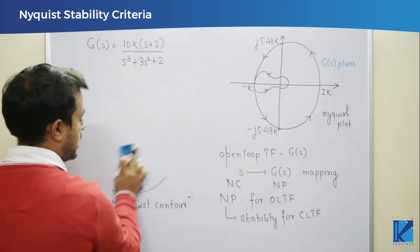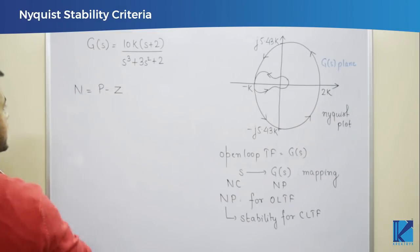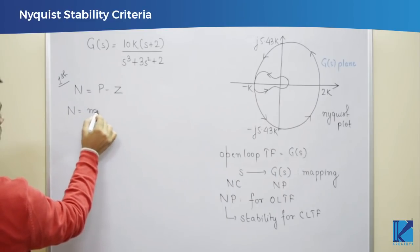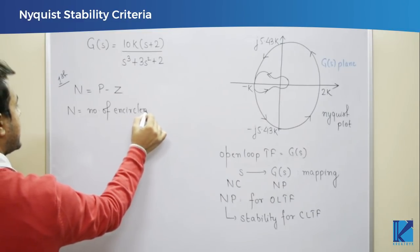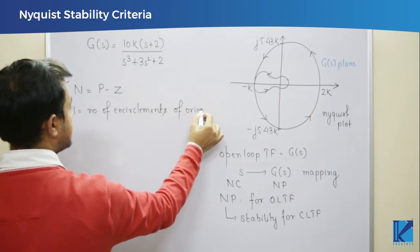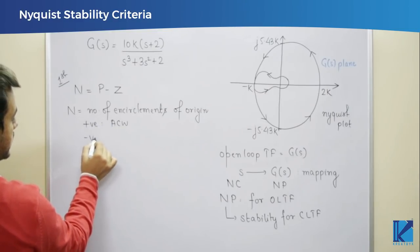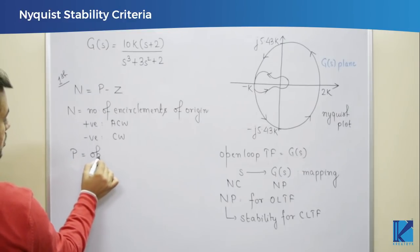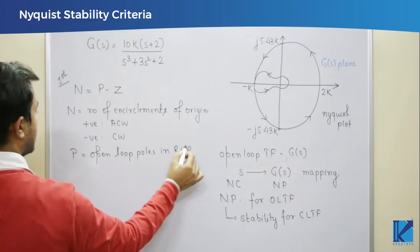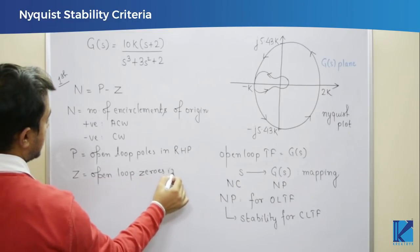In the Nyquist stability criteria, we say N = P − Z. There are two criteria. In the first criteria: N is the number of encirclements — how many times you go about a point — but here it is the encirclement of the origin. Encirclement is taken as positive for anticlockwise and negative for clockwise. P is open loop poles in the RHP, and Z is open loop zeros in the RHP.